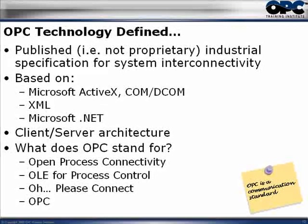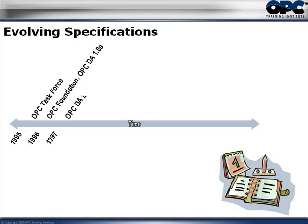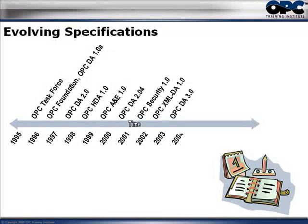We see that OPC is working on heating, ventilation, and air conditioning. In fact, some cities are running their traffic lights using OPC — pretty cool stuff. The OPC Foundation has been working hard over time on the different OPC specifications. Since 1995 when the OPC task force was formed, they've been coming up with new specifications and new releases every year.